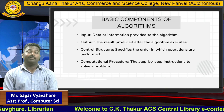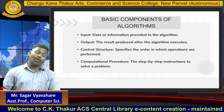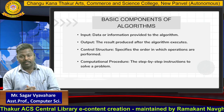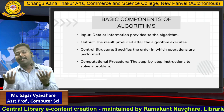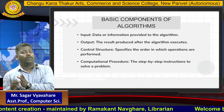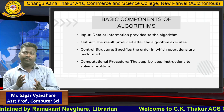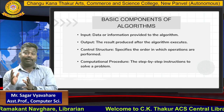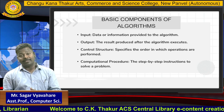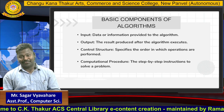The second component is output. So what is output? Why do we design an algorithm? To solve the problems. Suppose we are designing an algorithm for addition of two numbers — once we did the addition, what do we get? A number, an answer. That answer is nothing but the output. Every algorithm gives us an output, a result. Output is nothing but the result produced after the algorithm executes.